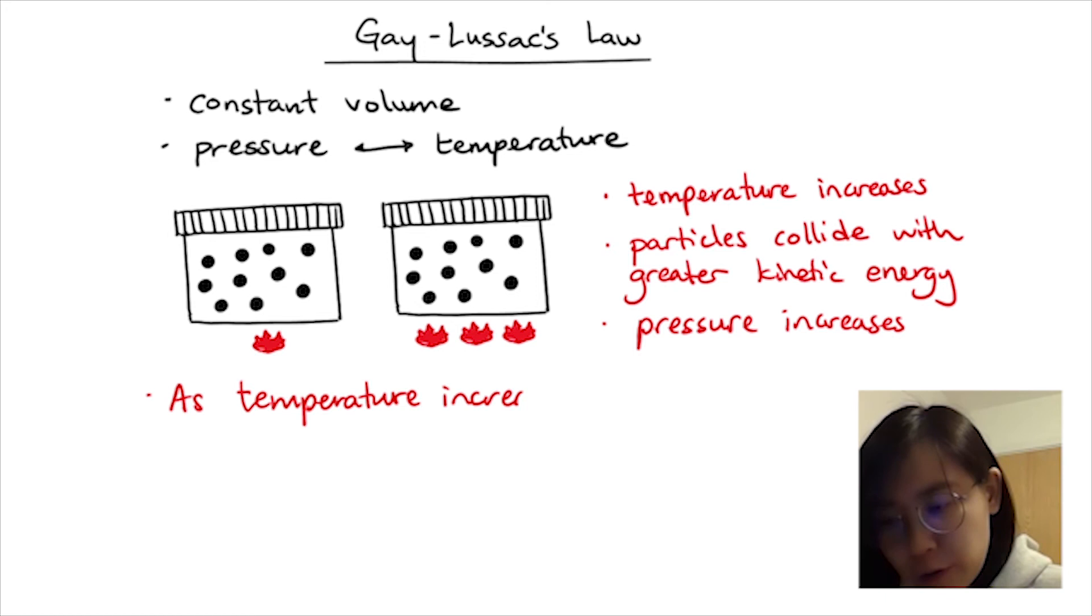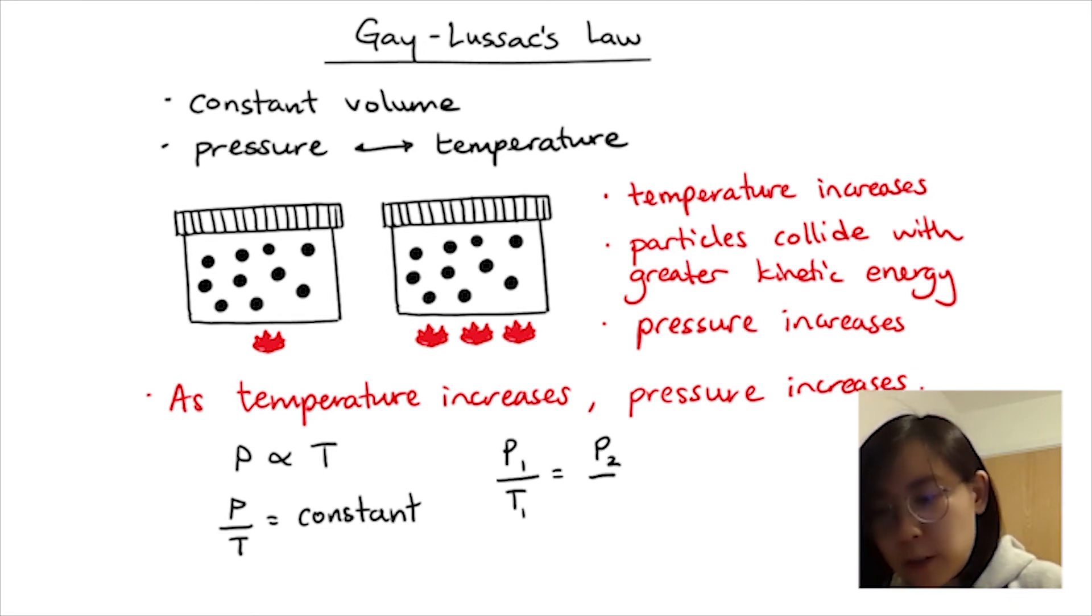So as temperature increases, pressure increases. Pressure is proportional to temperature. P over T is a constant. So Gay-Lussac's Law is P1 over T1 equals P2 over T2.